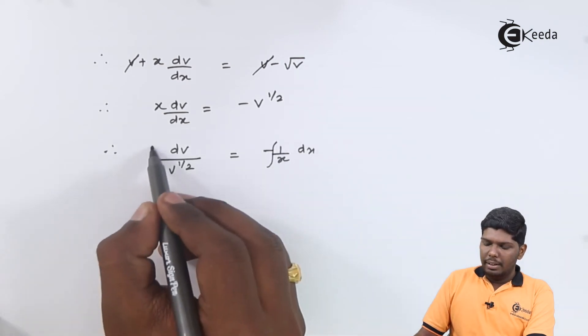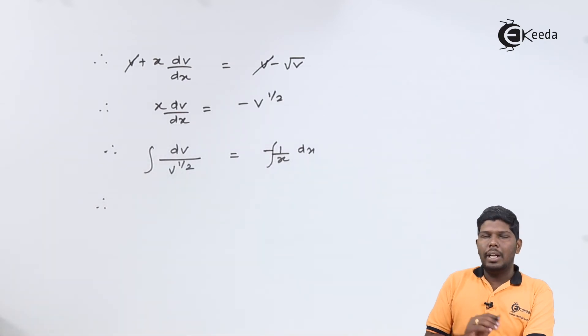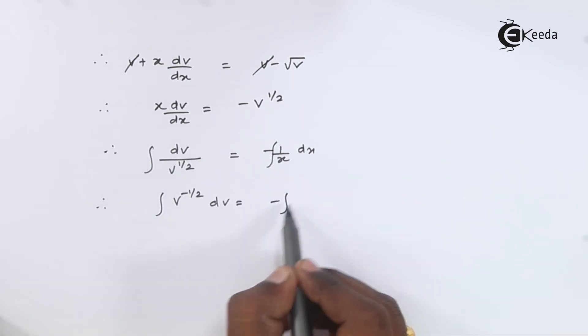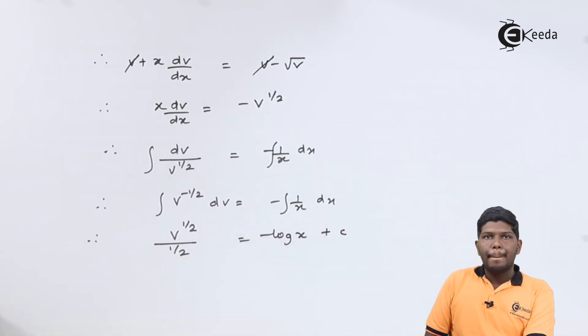On integrating, we need to take this term on the numerator and use the formula x raise to n that will give you x raise to n plus 1 upon n plus 1. So we have v raise to half upon half is equal to minus log x plus c.